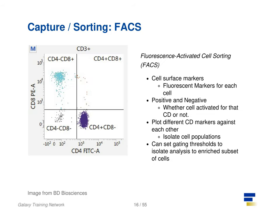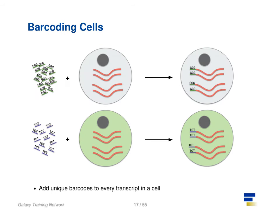Cells can also be gated and characterized by their cell surface markers via FACS. By plotting different surface marker intensities against one another, cells can be separated, gated, and labeled based on these fluorescent properties. Once isolated, cells can be barcoded.